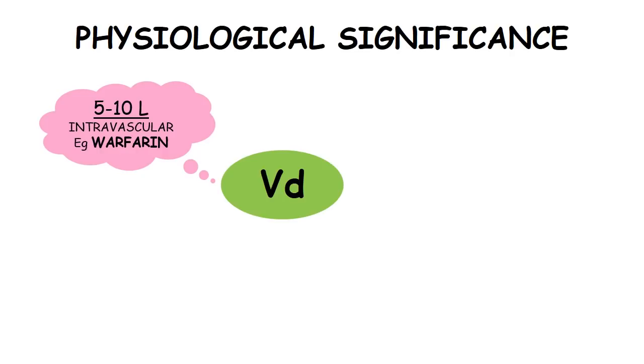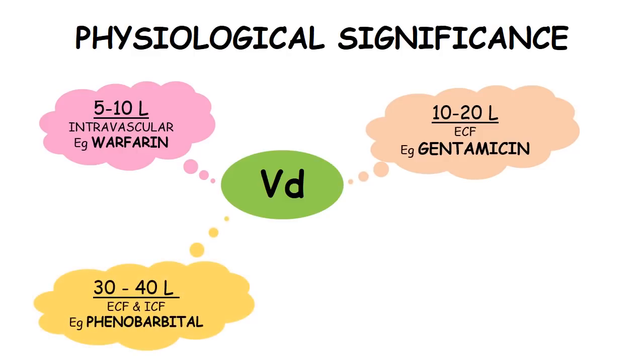If the volume of distribution is somewhere around 10 to 20 liters, then the drug is primarily present in extracellular fluid, like gentamicin. Also, if the volume is somewhere around 30 to 40 liters, then probably the drug is distributed both in extra- and intracellular fluid, for example phenobarbital.